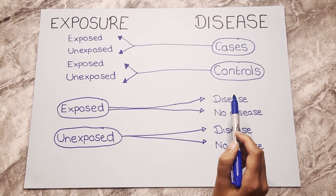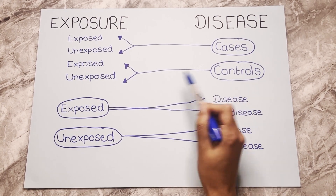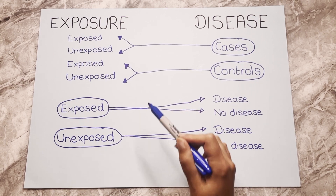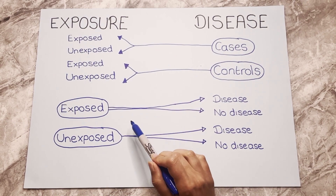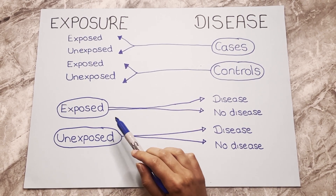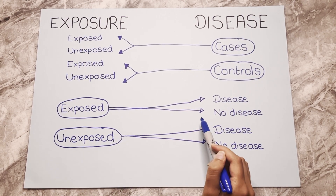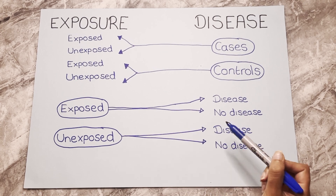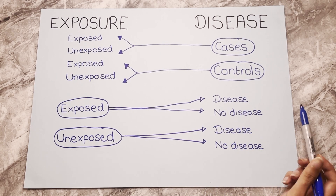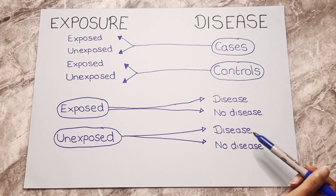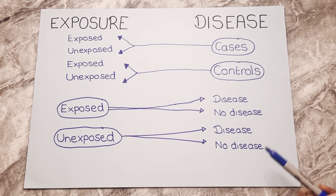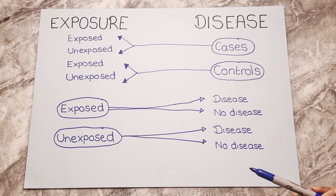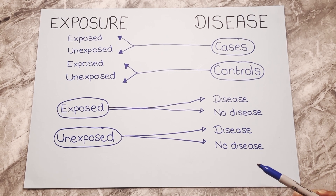Unlike a case control study where we look back in time, in a cohort study we follow people up over a period of time to see whether they go on to develop any specific diseases as a result of the exposure. In this way a cohort study is the exact opposite of a case control study.